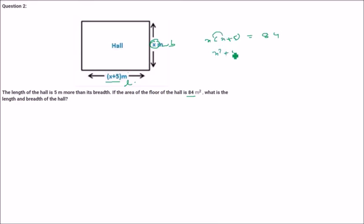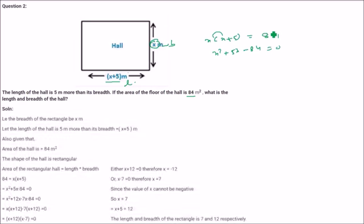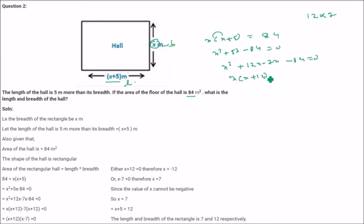Solving x into x plus 5 equal to 84: this gives x square plus 5x minus 84 equal to 0. Now 84 can be written as 12 into 7. This gives x square plus 12x minus 7x minus 84 equal to 0. Taking x common gives x plus 12, taking minus 7 common gives x plus 12. So the factors are x minus 7 and x plus 12.